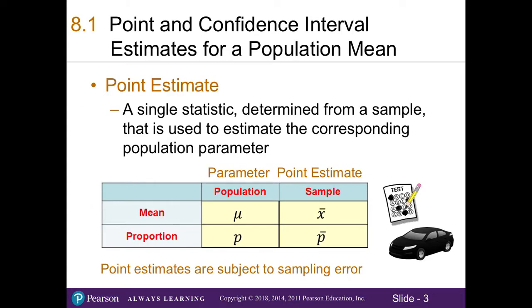Recall in previous chapters where we learned about sample means and sample proportions. In this chapter, we also refer to them as point estimates, in that we are using the sample data to estimate what's going on in the population. Here are some familiar symbols: mu for the population mean and x-bar for the sample mean, little p for the population proportion and p-bar for the sample proportion.